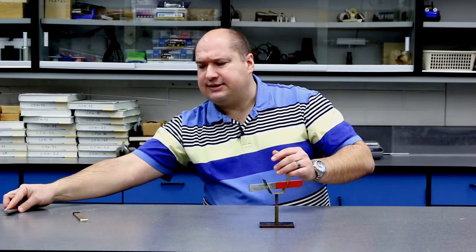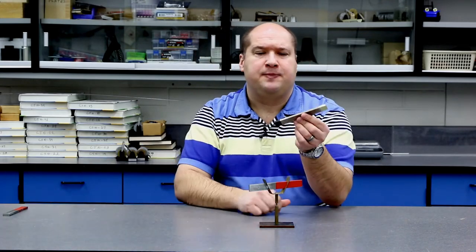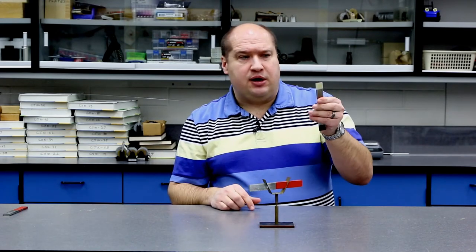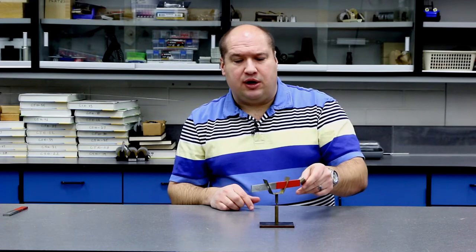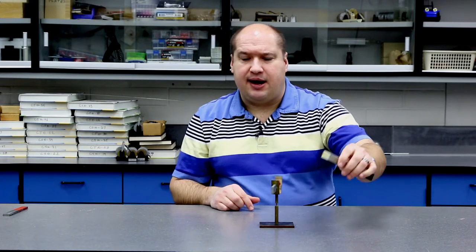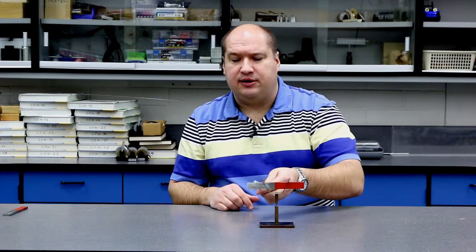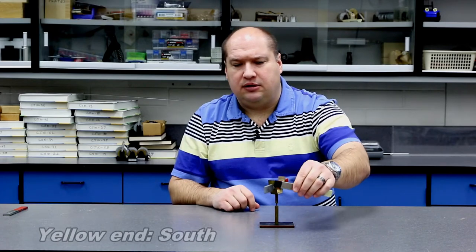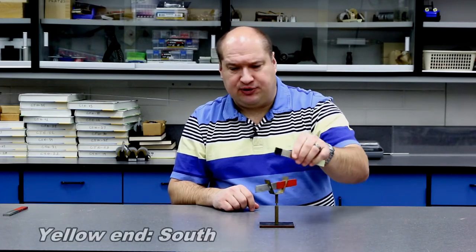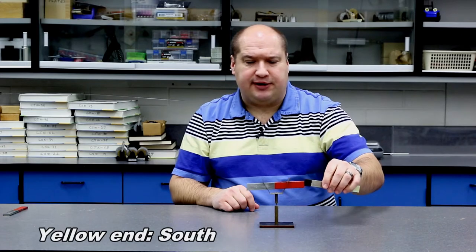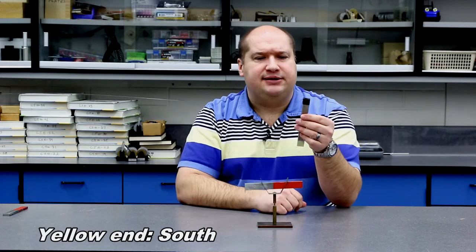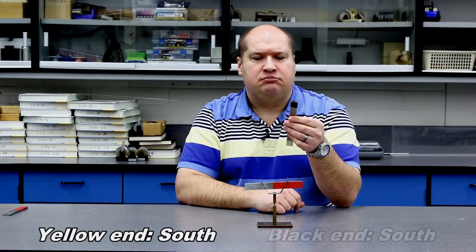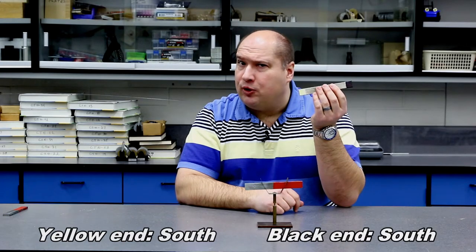But check out this other magnet that I've got here. I've colored one side black and one side yellow. Let's just give a quick investigation here. Yellow attracts red and also repels silver or south. That means that the yellow end is a south pole. And the black end also repels the south pole side and attracts the north pole side. That means that the black end is south.